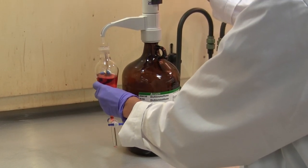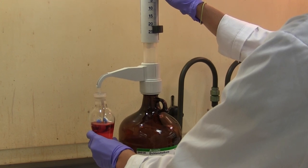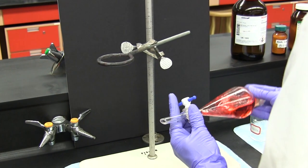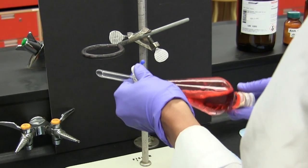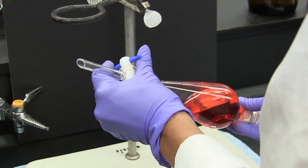A compound can be selectively separated from other compounds or impurities in a solution by extracting it from the original solvent into another solvent. This procedure is commonly referred to as a solvent extraction, or just extraction.